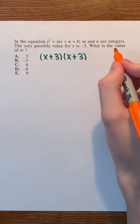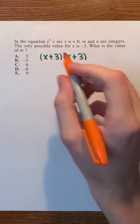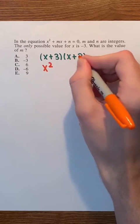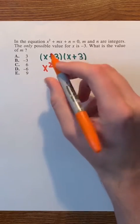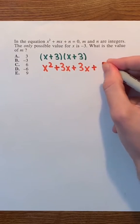Now, to find the value of m, we're going to FOIL. x times x is x², x times 3 is 3x, 3 times x is also 3x, and lastly, 3 times 3 is 9.